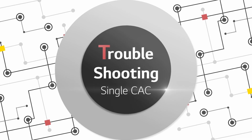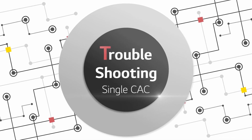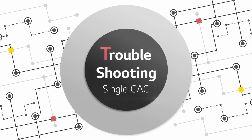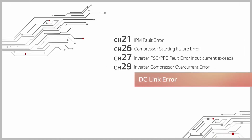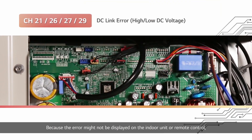Troubleshooting single-CAC: because the error might not be displayed on the indoor unit or remote control, the optimal way to check for errors is the outdoor unit's LED.